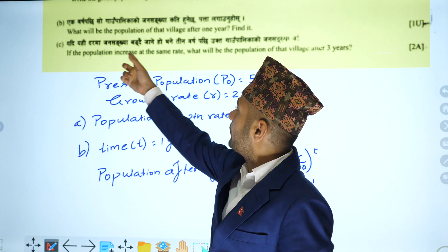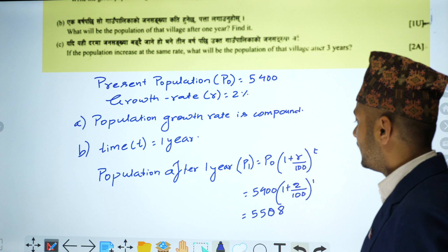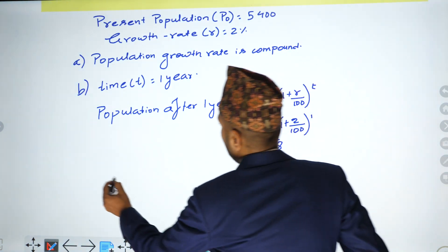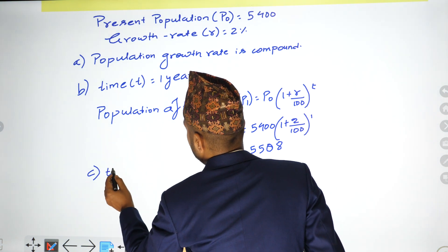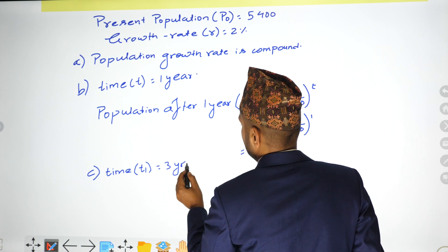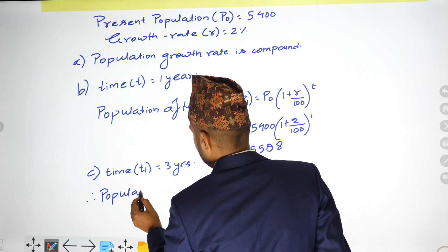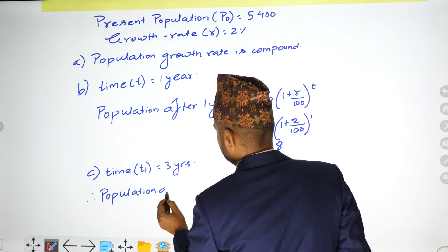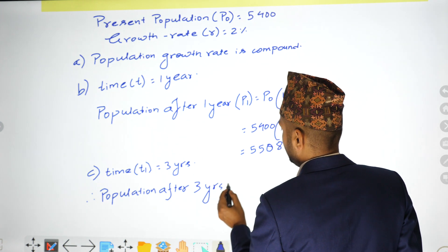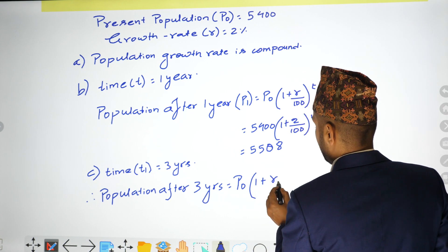The population increases at the same rate. What will be the population of the village after three years? Population after three years equals P0 × (1 + r/100)^t.